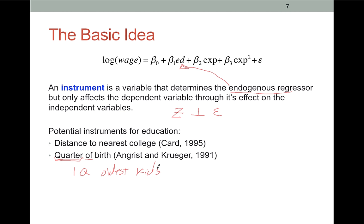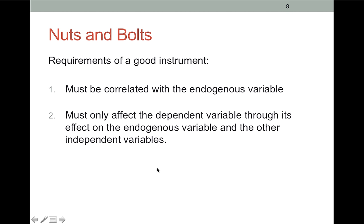So how does IV work? Well, first we need a good instrument. And that means an instrument that's correlated with our endogenous variable, like education. And second, a good instrument has to affect the dependent variable only through its effect on the endogenous variable and the other independent variables. It cannot have a direct effect.